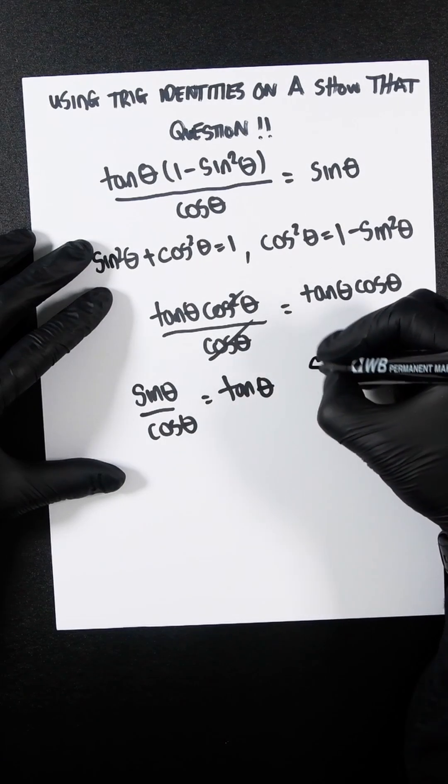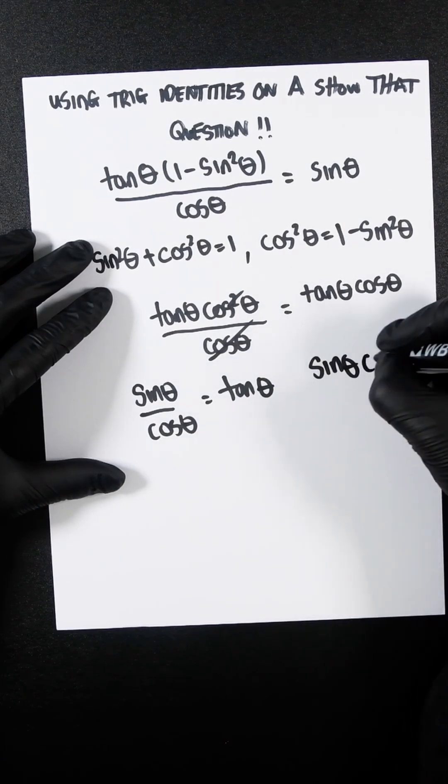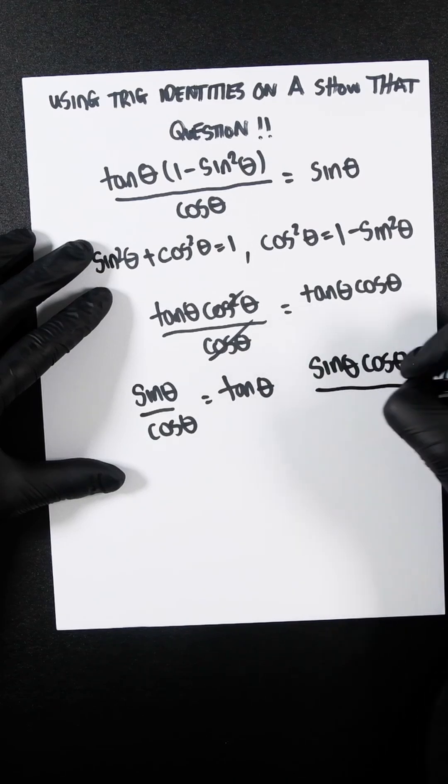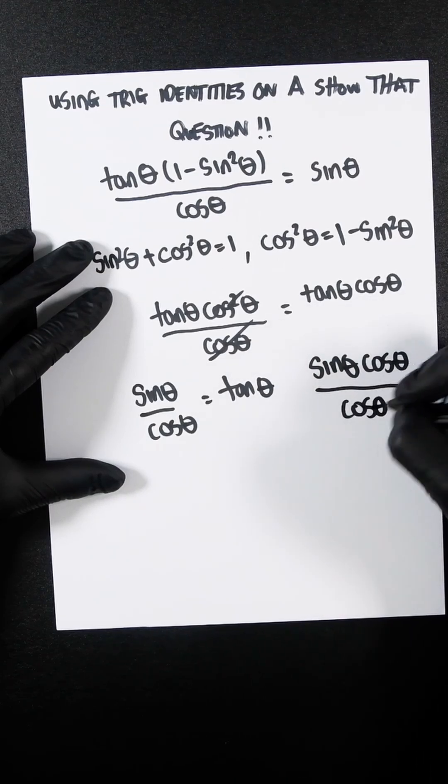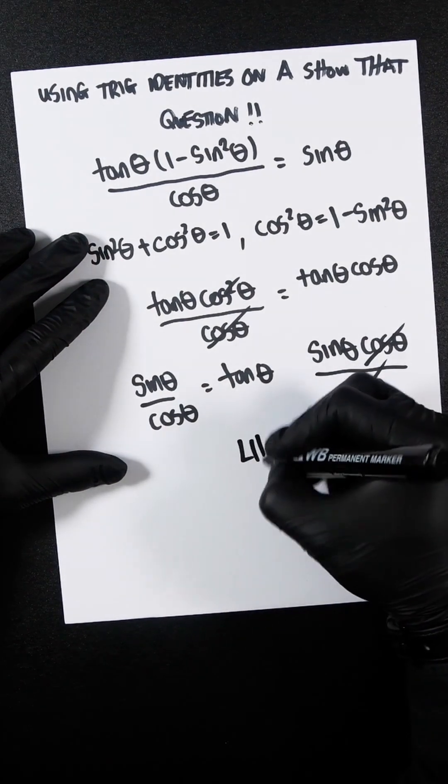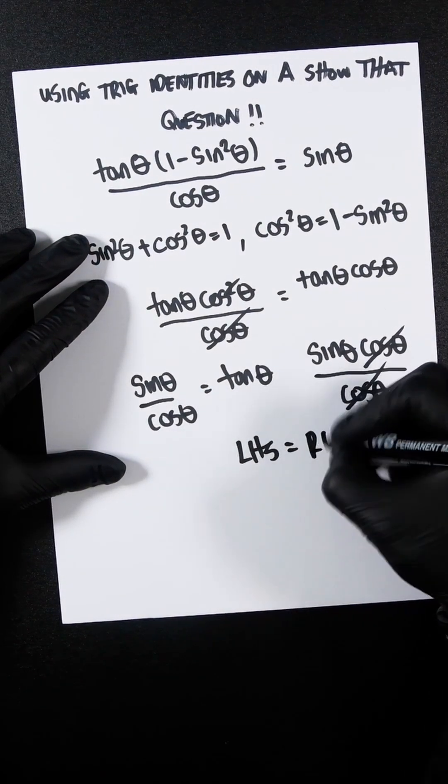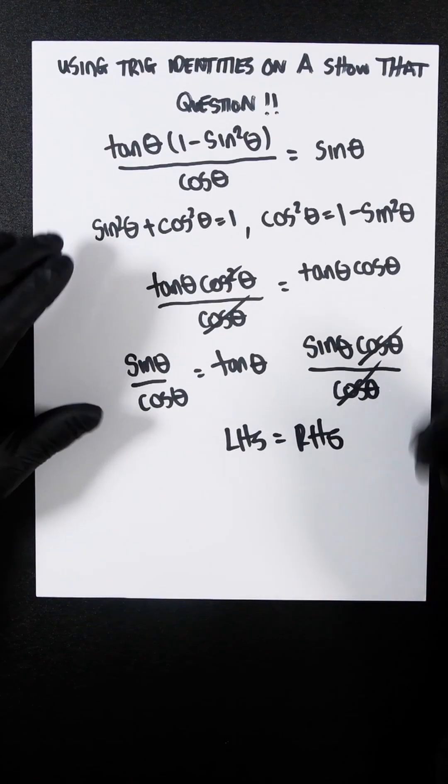So if we sub that in, you're going to get sin theta cos theta over cos theta, and they cancel out, so the left-hand side equals the right-hand side.